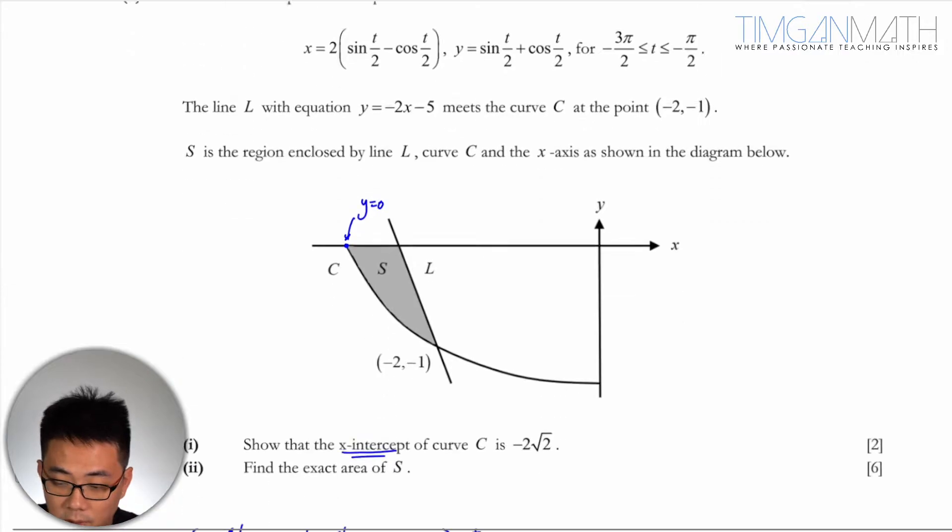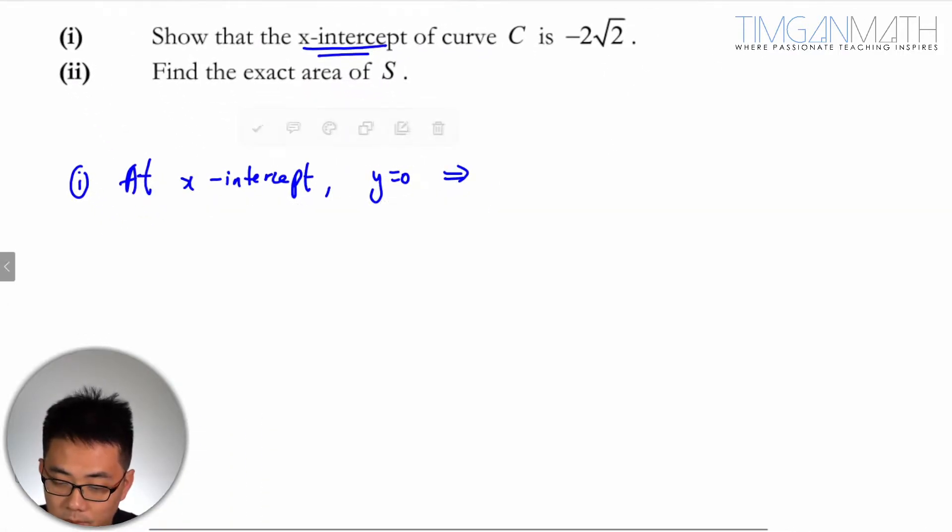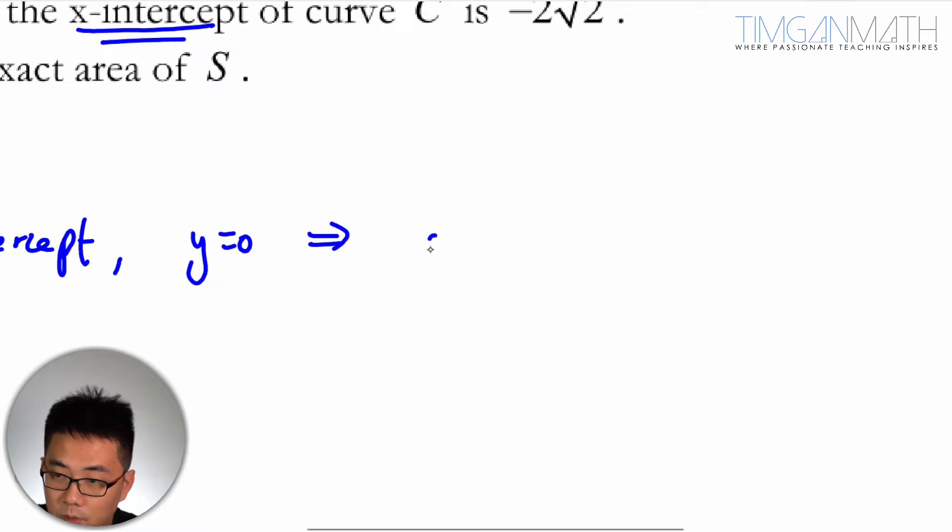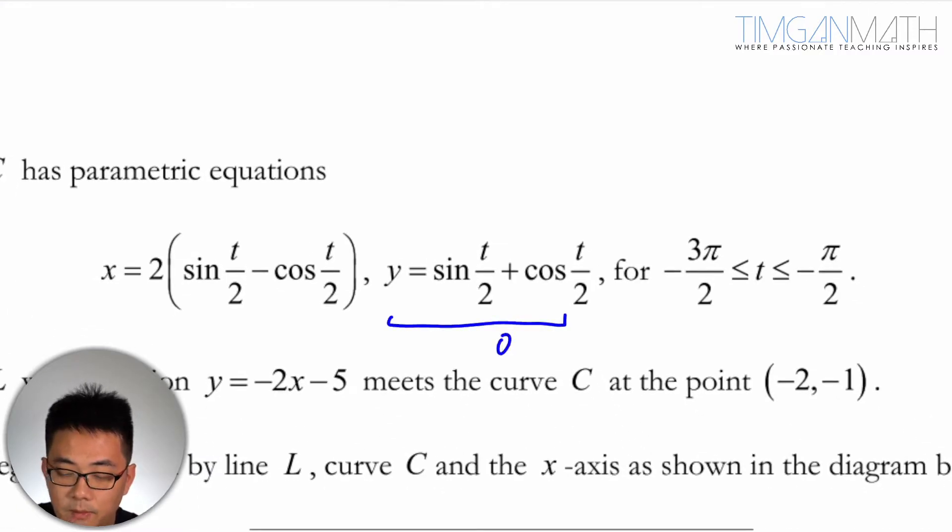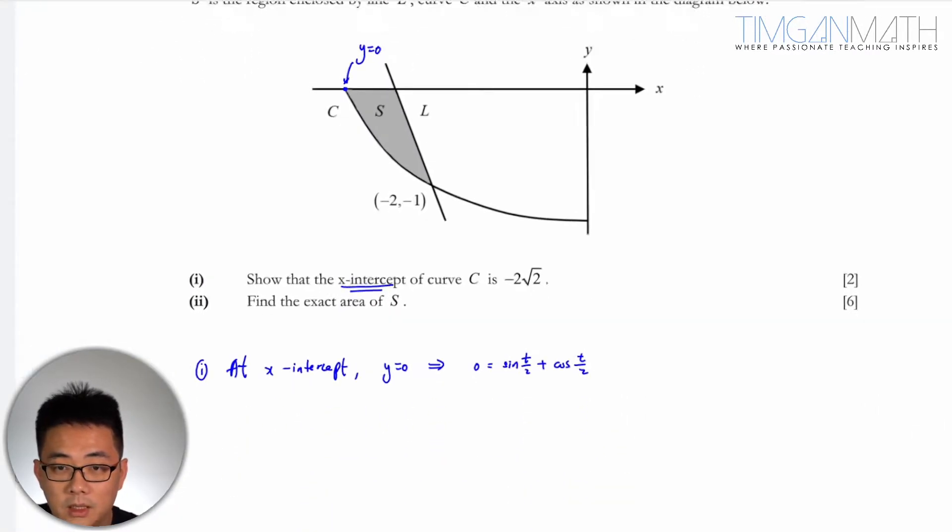So when y equals 0, this will give us 0 equals sine(t/2) + cosine(t/2), meaning to say this equation here becomes 0. This becomes 0, right? So that is the point there.